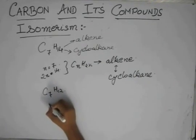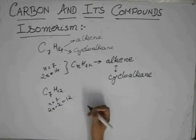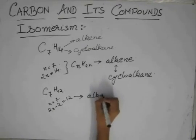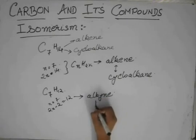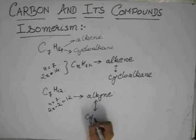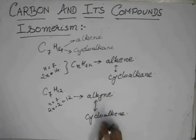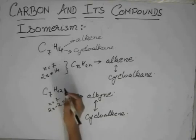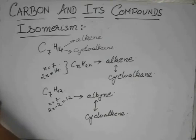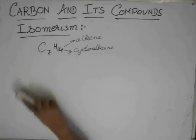So C7H12, CN is 7, so I will just directly write 2N-2 is 12. So it is an alkyne. But an alkyne shares a common molecular formula with a cycloalkene. So this can be an alkyne as well as a cycloalkene. So this is the important thing which you should remember when you are asked these type of questions.